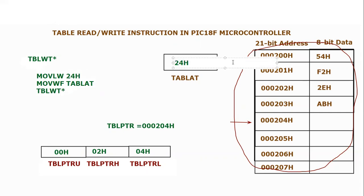After that, I'm using this instruction table write. That means whatever the location pointed by table pointer will store the value of TABLAT register, which is 24. So this 24 hex will move eventually in this location.